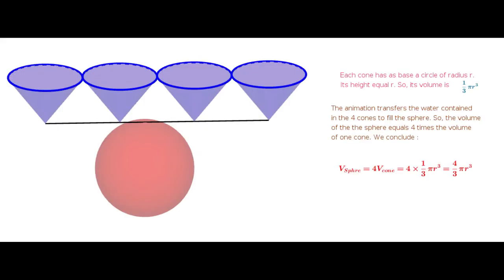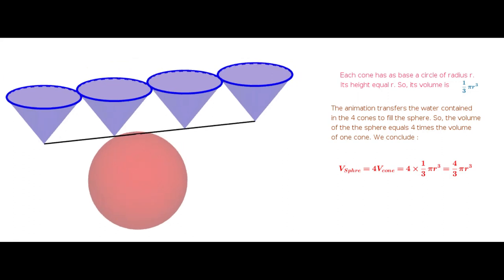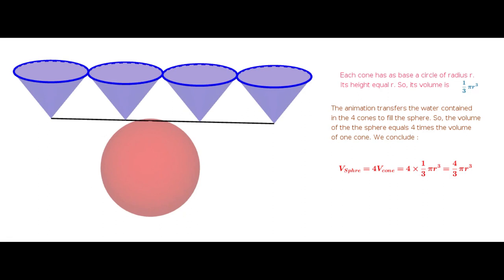To find the volume of the sphere, let us relate the volume of a cone with the sphere. Consider a sphere of radius R, and consider 4 cones of base radius equal to the radius of the sphere and height also equal to the radius of the sphere. We know that the volume of a cone is equal to (1/3)πr²h, where h equals r. Therefore, the volume of a cone is equal to (1/3)πr³.